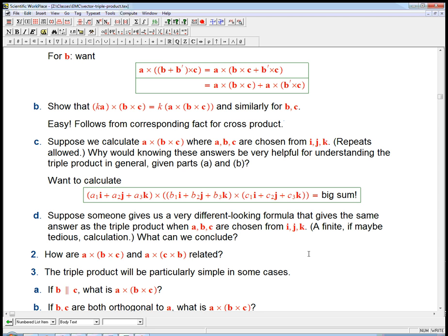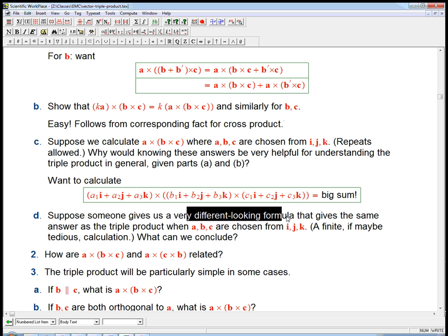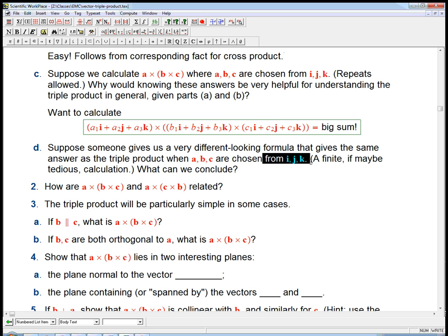So in particular, take a look at d here. Suppose someone gives us a very different looking formula, or we come up with a very different looking formula, some sort of proposed identity, that a cross b cross c is always equal to something that looks very different. But suppose it gives the same answer as the triple product, what we want to calculate, just for these answers. That's a finite calculation because, at most, there's 27 possibilities. Three possibilities for a, three for b, three for c. If there's the same on all of those, then this principle up here says they must be the same in general. So that's very powerful already. It says that if you at least give me a formula, I can at least just check it on some very, very simple cases. And we know that that's going to be simple to check. I cross j, j cross k, those aren't very hard. We know what those are. And so that's going to be something we're going to use later.